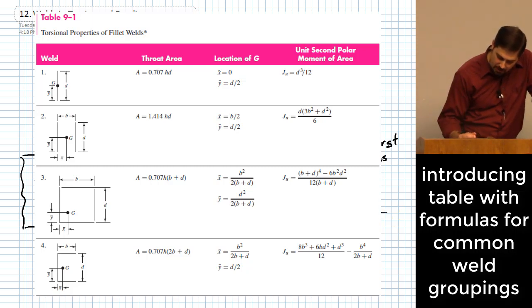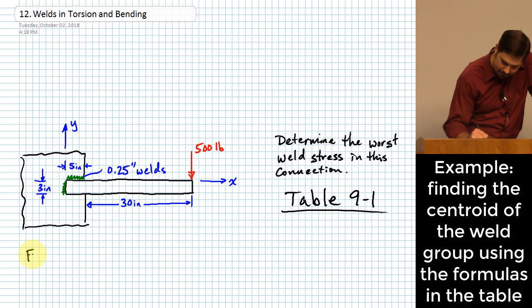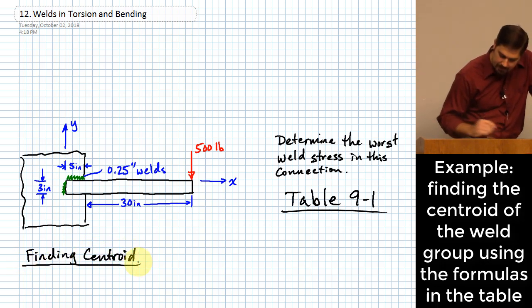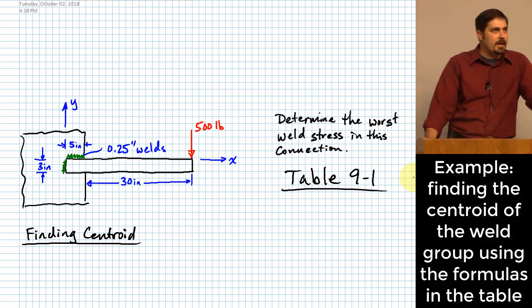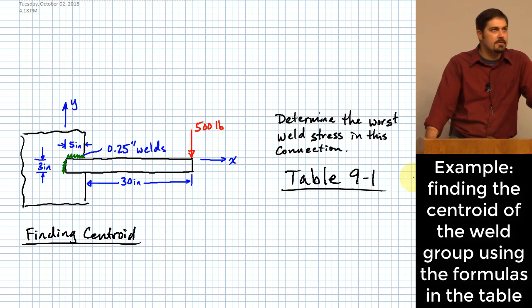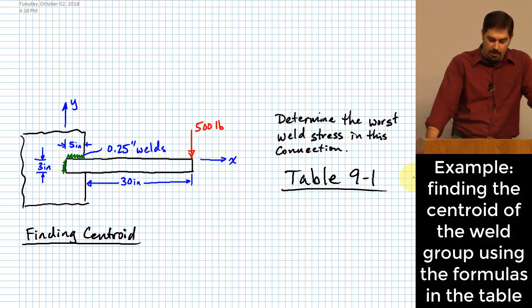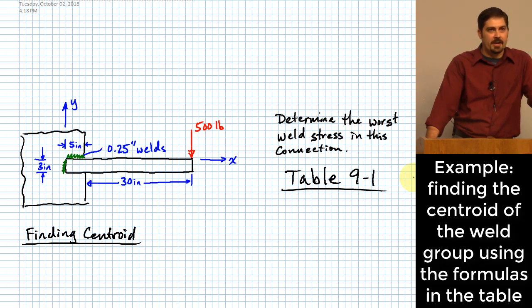This is actually going to be a little bit more involved than the bolt example because we need to do a centroid. Can we get away with just a centroid in one direction? Probably not. Since this shape is not symmetric, we don't get any benefit from symmetry. We actually have to compute both directions of the centroid. Let's go ahead and do that. We need to match the shape we have to the shape in the book.